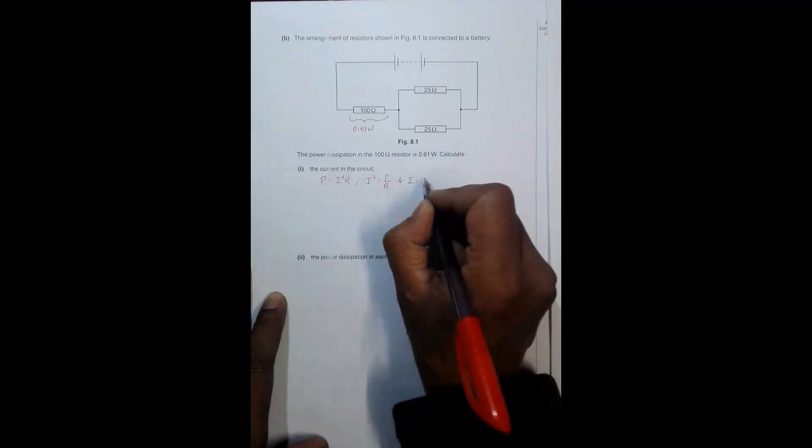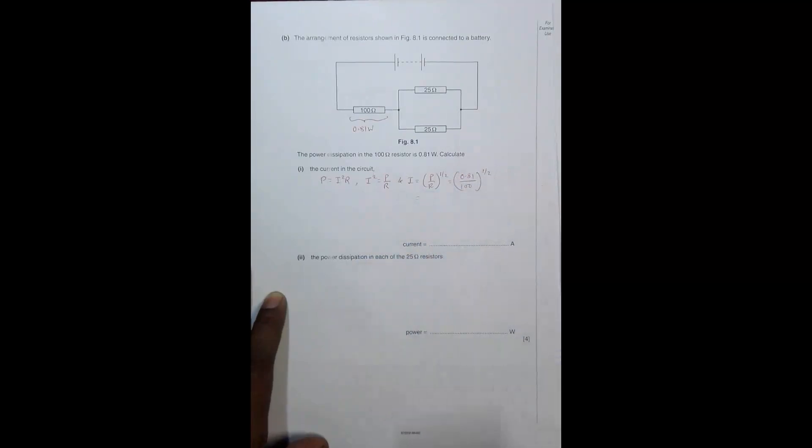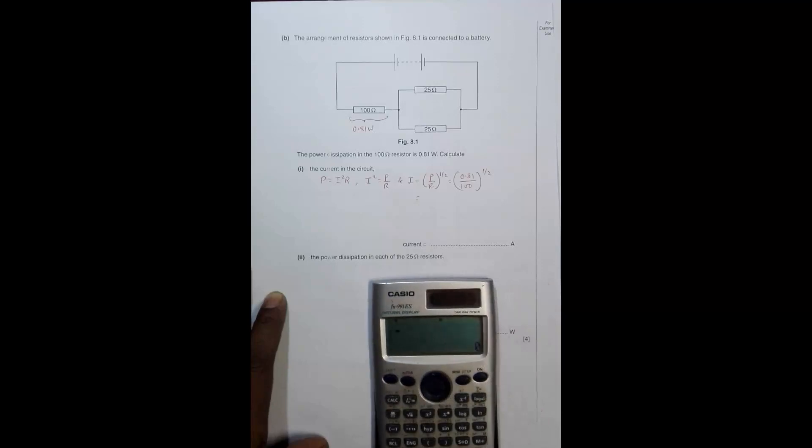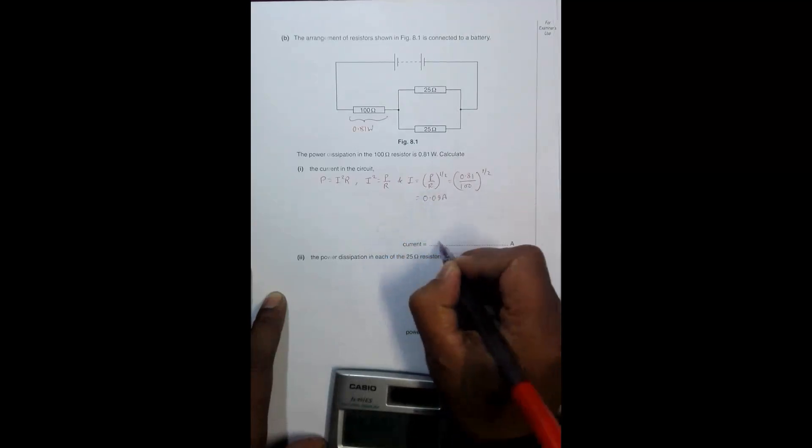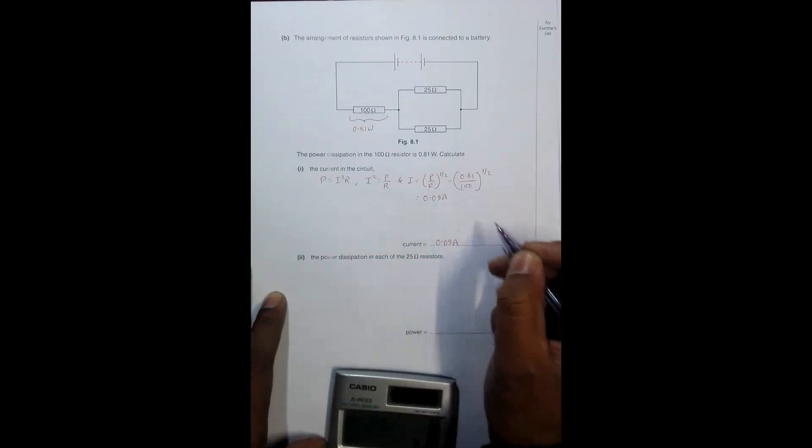Using P = I²R, we get I² = P / R, so I = √(P / R) = √(0.81 / 100) = √0.0081 = 0.09. Therefore the current through the 100 ohm resistor is 0.09 amperes.